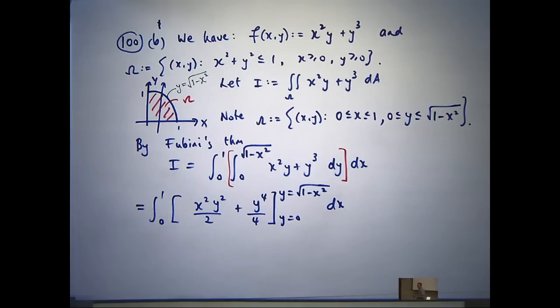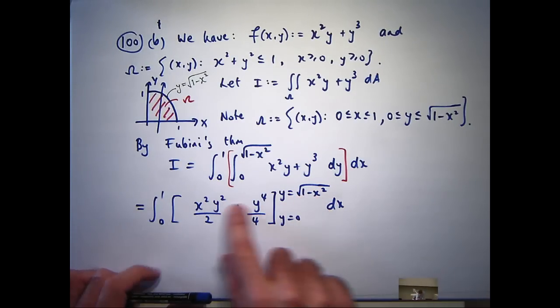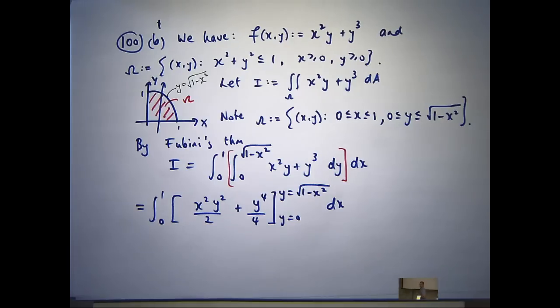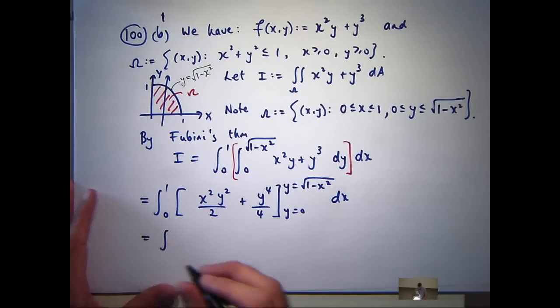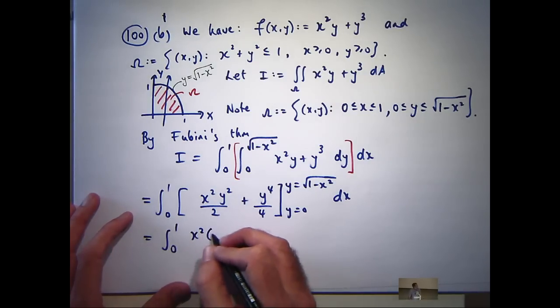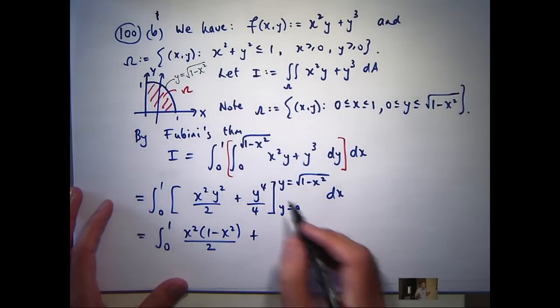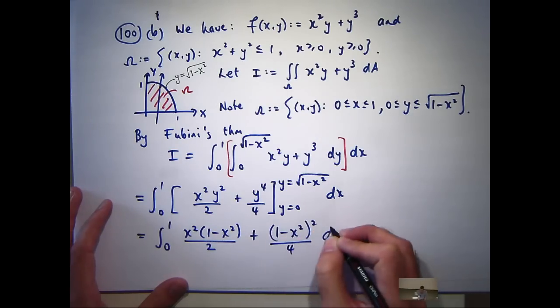OK, so now I need to sub in my limits of integration. Well, when I sub in y equals 0, this is obviously going to be 0. And when I sub in root 1 minus x squared, I notice that the square root sign is going to disappear, because I've got y squared there that'll take care of the square root sign, and y to the power of 4. So if I substitute this in, I should get something like the following: I'll get x squared times 1 minus x squared all over 2, plus 1 minus x squared all squared over 4, dx.